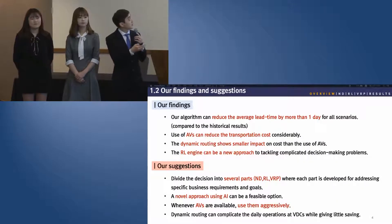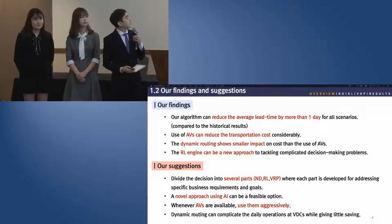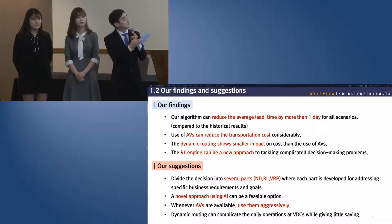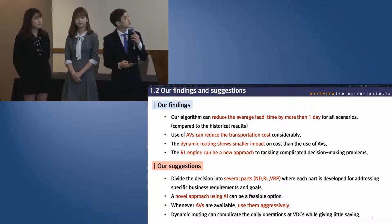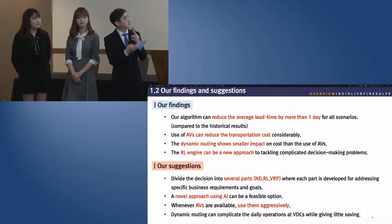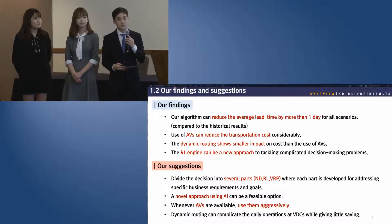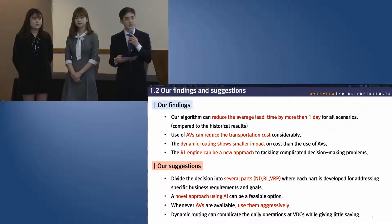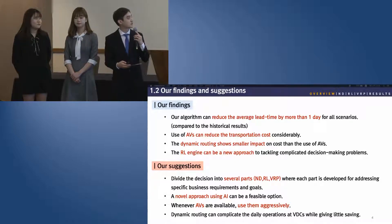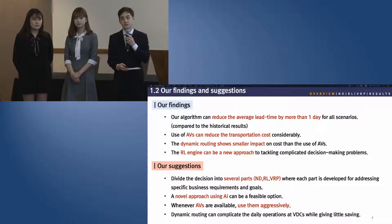Here are our findings and suggestions. In our findings, our algorithm can reduce the average lead time by more than one day for all scenarios, and use of AVs can reduce the transportation cost considerably. In our suggestions, we recommend dividing the decision into several parts where each part is developed for addressing specific business requirements and goals, and a novel approach using AI can be a feasible option.